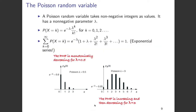What is a Poisson random variable? A Poisson random variable takes non-negative integer values and has a non-negative parameter lambda. The distribution is given as follows: the probability that X equals k — where X is the Poisson random variable — is given by e to the power of minus lambda, times lambda to the power of k, divided by k factorial. This holds for all values of k starting from 0, 1, 2, all the way up to infinity.